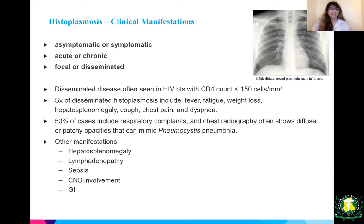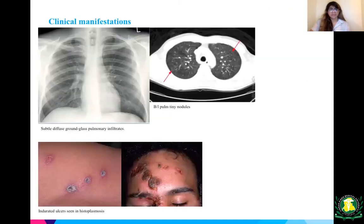Other manifestations include hepatosplenomegaly, lymphadenopathy, sepsis, CNS involvement, and GI involvement. These pictures show bilateral pulmonary tiny nodules, ground-glass pulmonary infiltrates, and indurated ulcers representing skin manifestations of histoplasmosis.